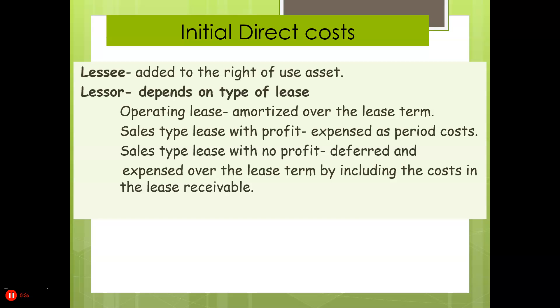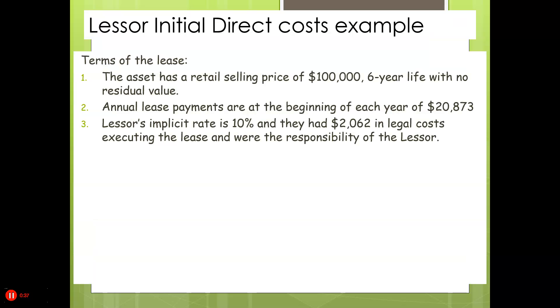Now we'll take a look at an example. The asset has a retail selling price of $100,000, a six-year life with no residual value. Annual lease payments are at the beginning of each year of $20,873. The lessor's implicit rate is 10% and they had $2,062 in legal costs executing the lease, which were the responsibility of the lessor.